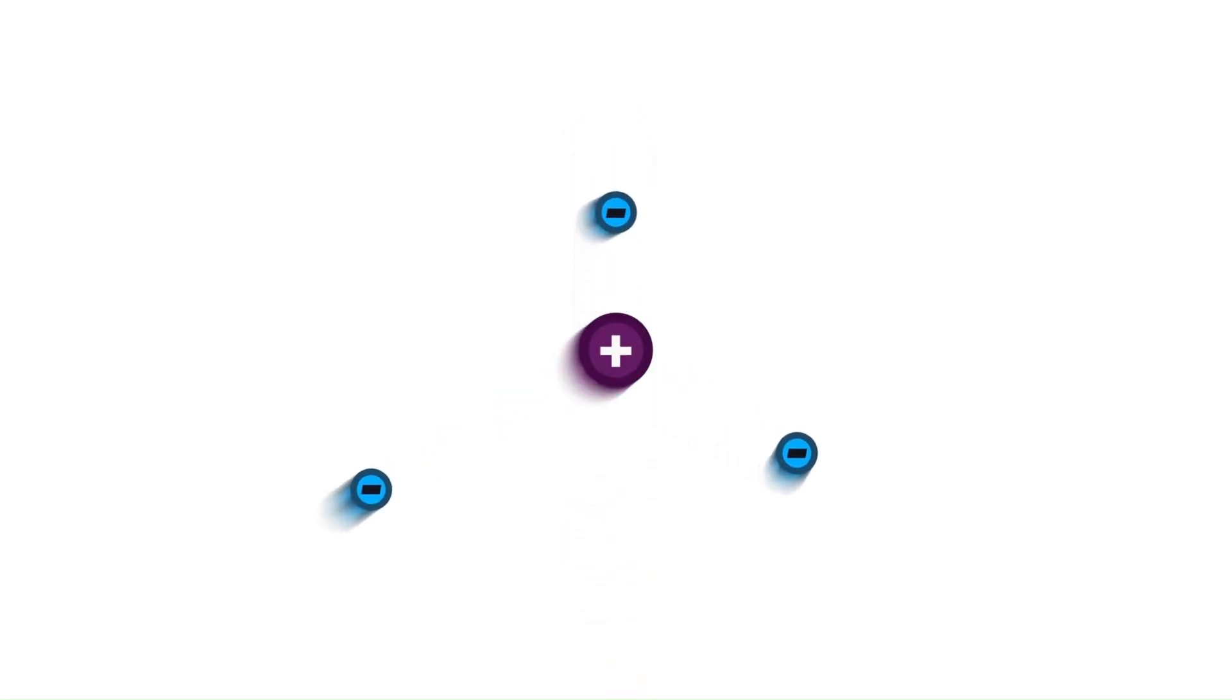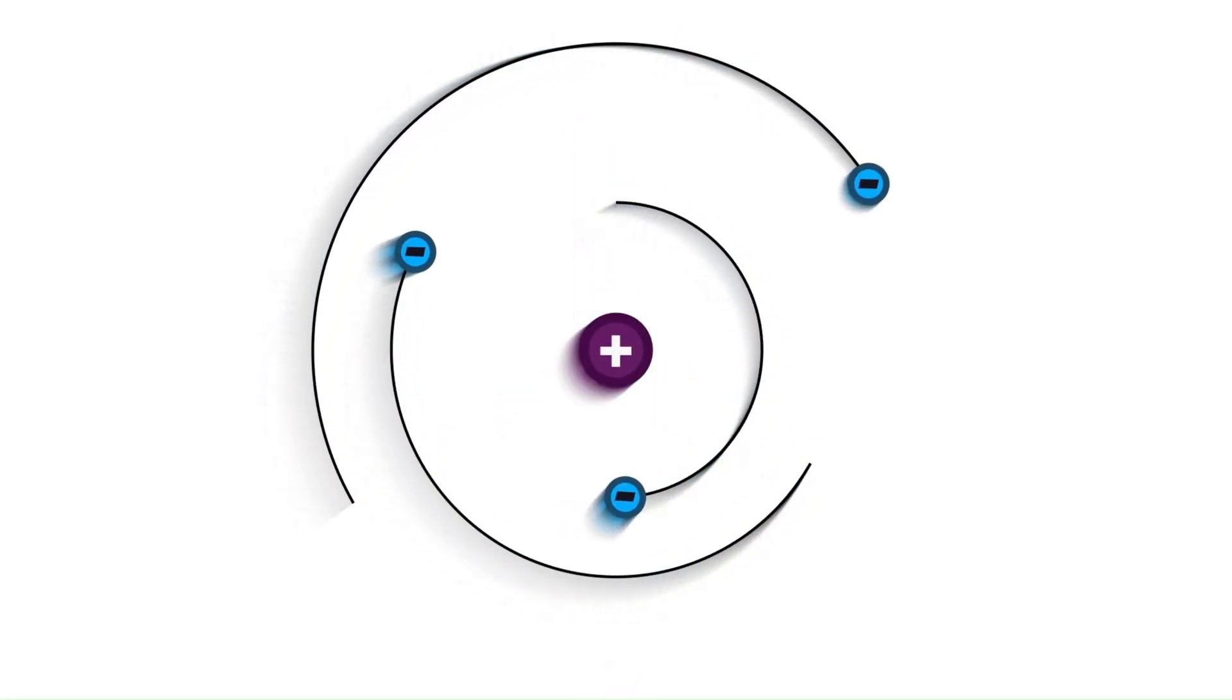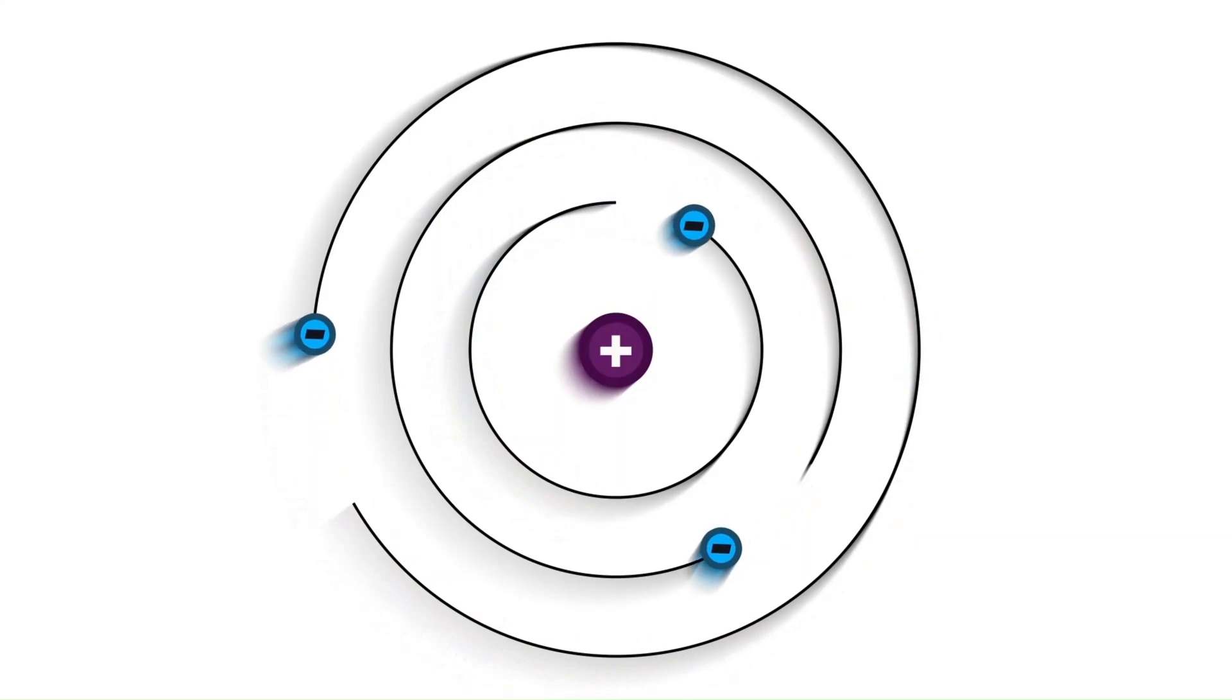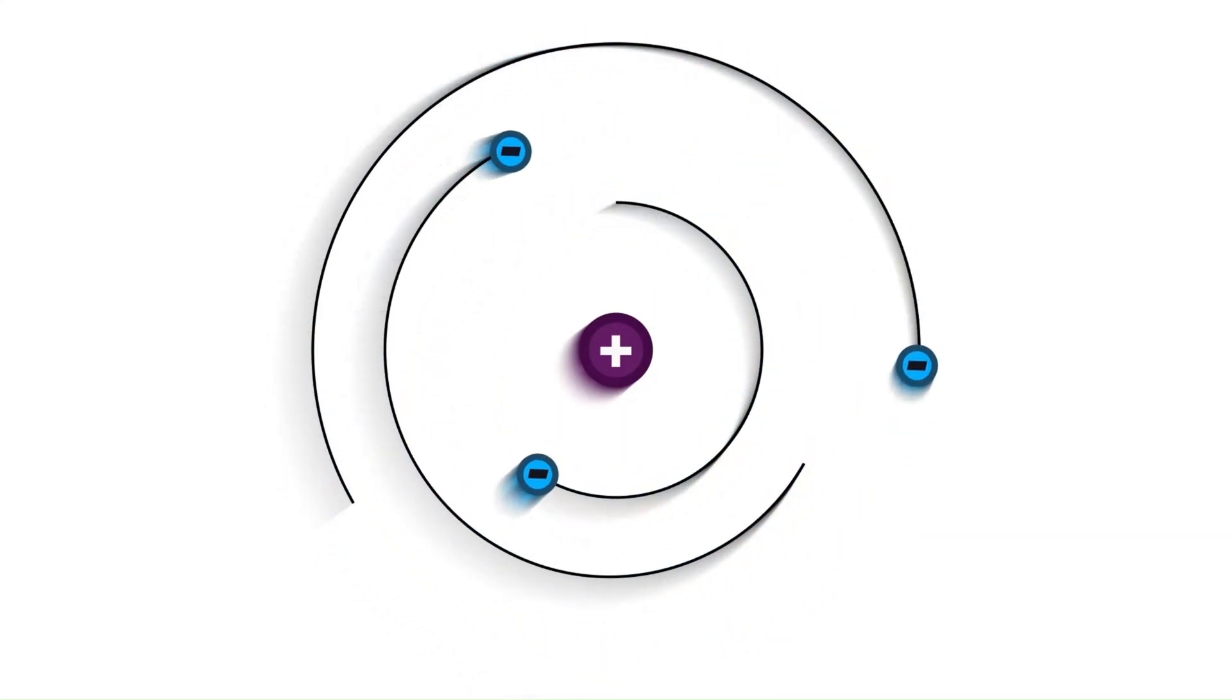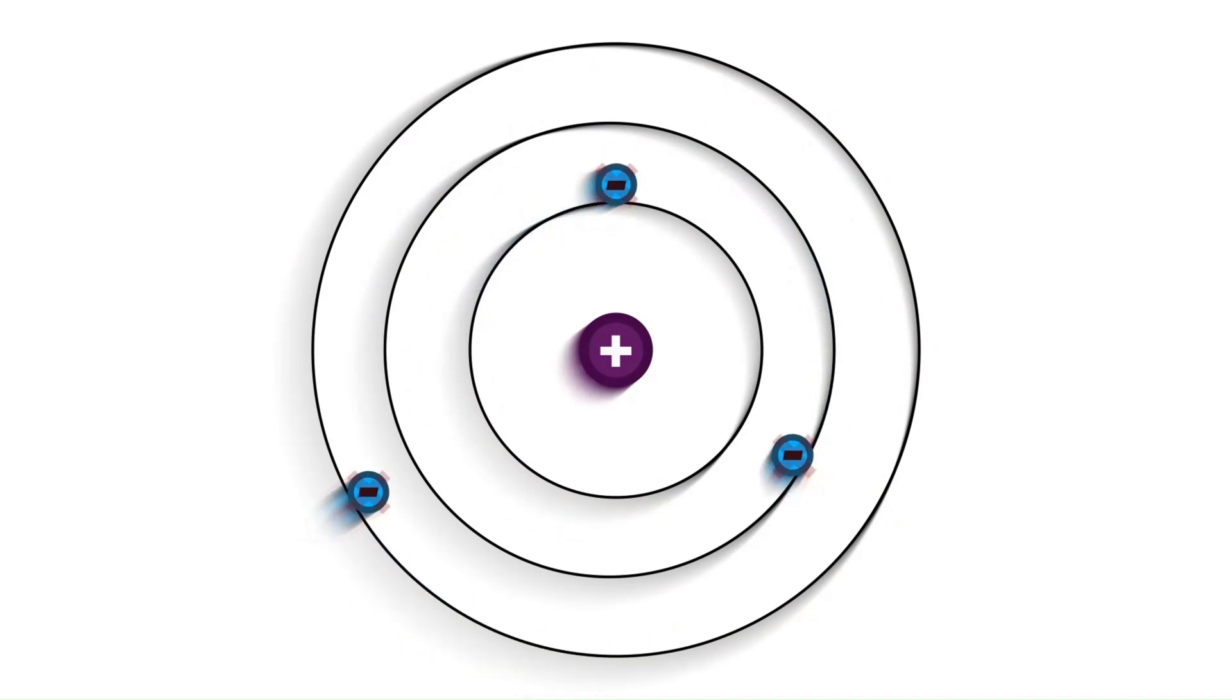Hey everyone, we have all learned that electrons spin around the nucleus in their own special orbits, right? But here is the mind-bending mystery: why don't electrons just change their orbit whenever they feel like it?